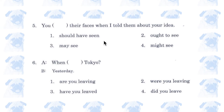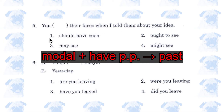Number 5. 'You should have seen / ought to see / may see / might see their faces when I told them about your idea.' You have to notice that the subordinate clause is in the past tense, which means the answer has to be number 1: 'should have seen'.